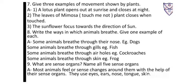Number 7. Give 3 examples of movement shown by plants. Answer: 1. A lotus plant opens out at sunrise and closes at night. 2. The leaves of mimosa, touch-me-not plant, close when touched. 3. The sunflower faces towards the direction of the sun.